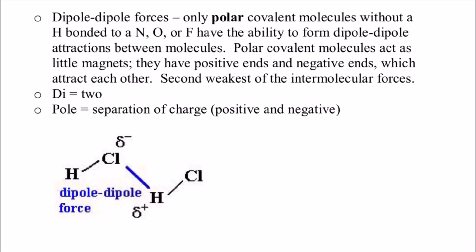The next type of intermolecular force is called a dipole-dipole force. Di means two, and pole, in science, is the separation of something. So we have a separation of charge between two different molecules. This shows up in polar covalent molecules. They are the second strongest — the middle — of the intermolecular forces. They show up whenever hydrogen is not bonded to nitrogen, oxygen, or fluorine. So if hydrogen is bonded to something besides nitrogen, oxygen, or fluorine, then you end up with this dipole-dipole intermolecular force.